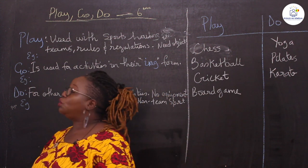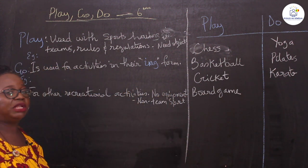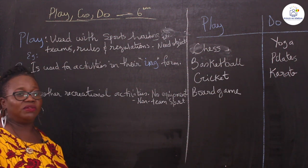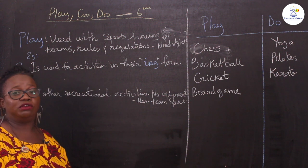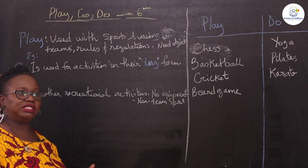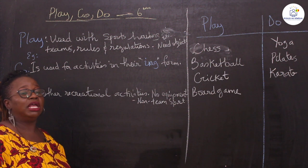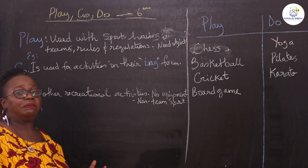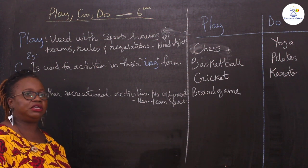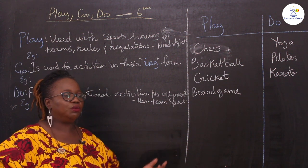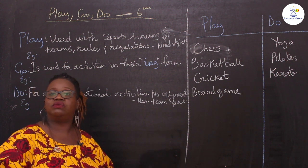Let's start with 'play'. When you want to use 'play' for a sport, it has to be a kind of sport that has a team, has rules, has regulations, and uses an object like a ball, a disc, or a bat. For example: I play basketball, I play volleyball, I play handball. It has to be a sport that has teams playing against each other, with rules and regulations.